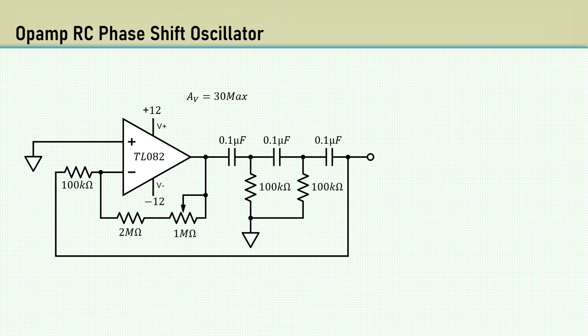The RC phase shift oscillator can be easily implemented with an op-amp. The difference between it and the vacuum tube is the input impedance. The input impedance of the op-amp in the inverting configuration is equal to the input resistor, since there is a virtual ground at the inverting terminal.